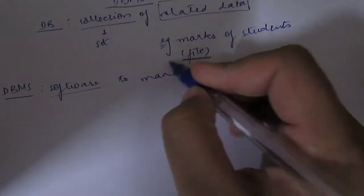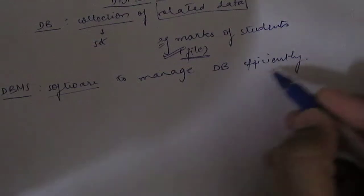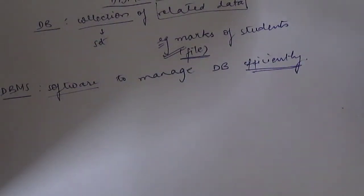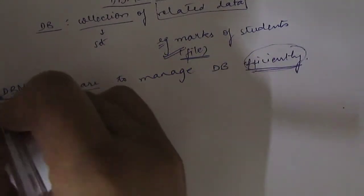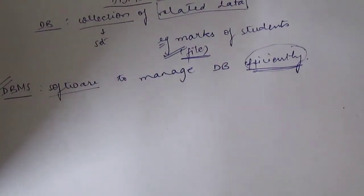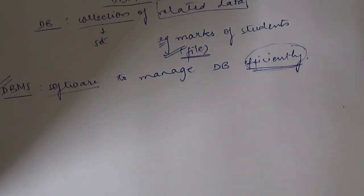When we manage files manually, there is a lot of complexity, so our efficiency can be hampered. To prevent that, we use DBMS. Let's look at the difference between DBMS and a file system to understand the motivation behind why DBMS was created.